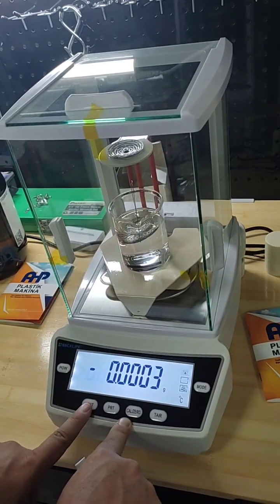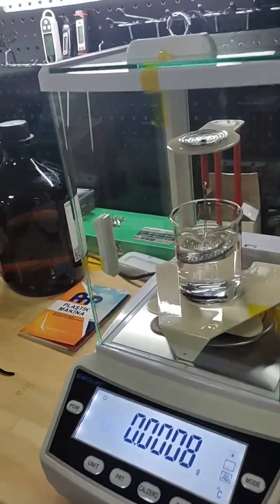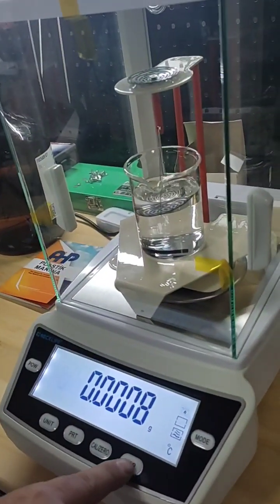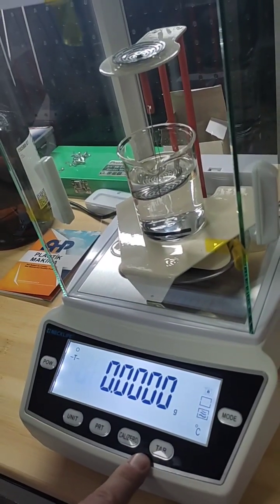Click on unit. And now the precise balance is set for density measurement using immersion method. Here the air is blinking. Click on tar.